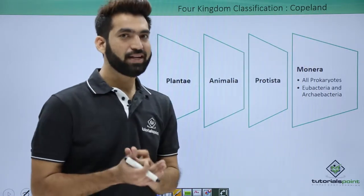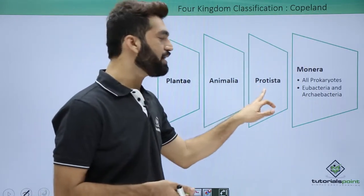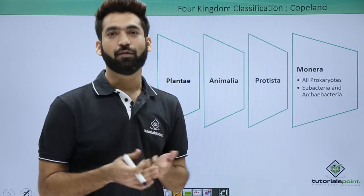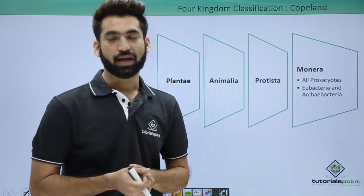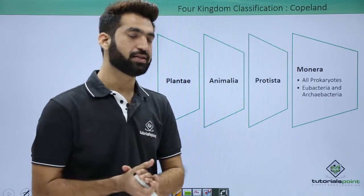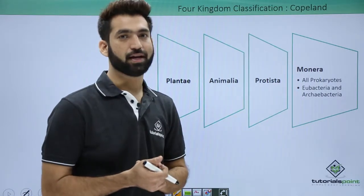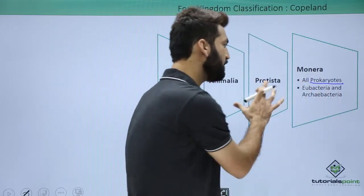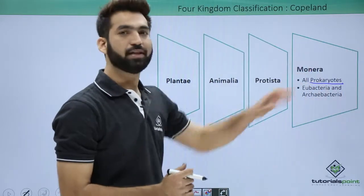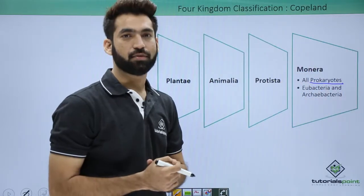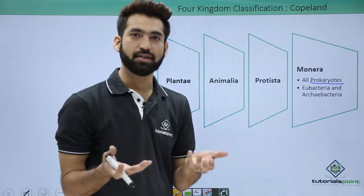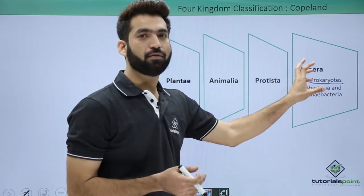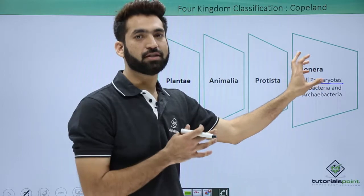Copland observed that in the three kingdom classification system given by Ernst Haeckel, bacteria — the group of prokaryotes — were grouped with eukaryotes. So he removed all prokaryotes from Protista and gave them a different kingdom called Kingdom Monera, which emerged as the fourth kingdom, mainly comprising all prokaryotic members.